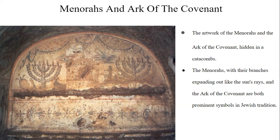The painting style successfully conveys the religious nature of the symbols represented. The choice of simple lines and shapes to depict such crucial holy symbols reflects early Jewish art's emphasis on symbolism.